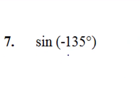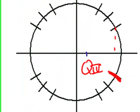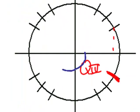Oh, look at this. We have the sine of negative 135 degrees. That means that we're going to be coming in the negative direction, 135 degrees, which is equivalent to being right here in quadrant 3.